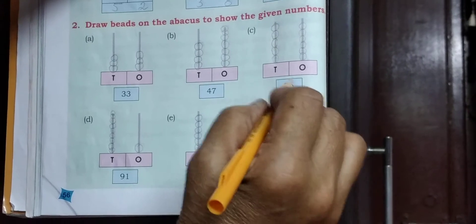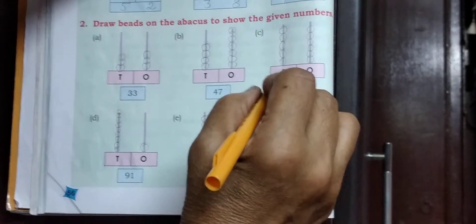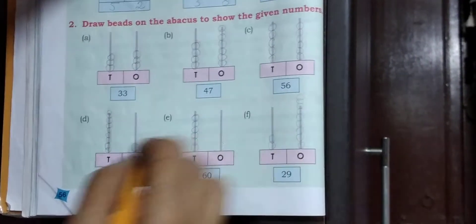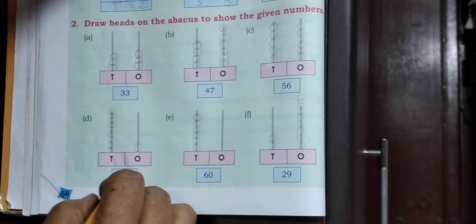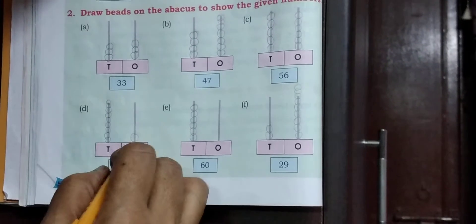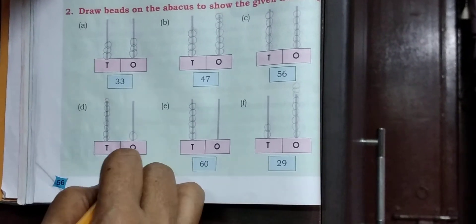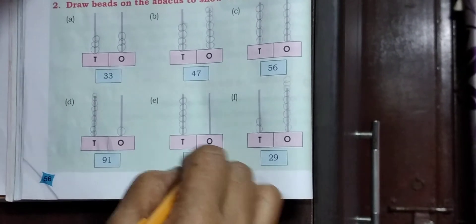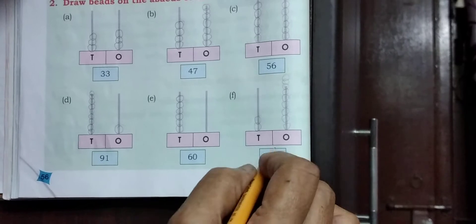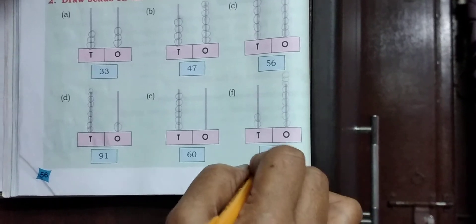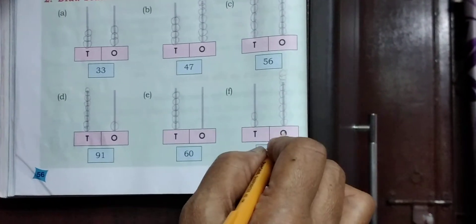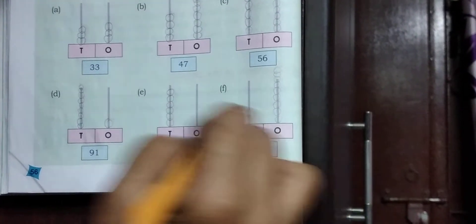56: 5 tens, 6 ones. 91: 9 tens, 1 one. 60: 6 tens, 0 ones. 29: 2 tens, 9 ones.